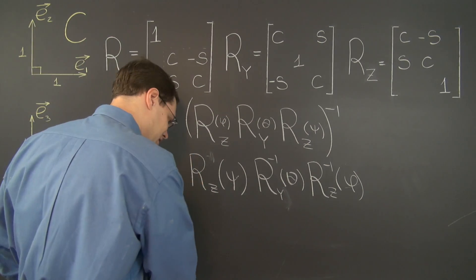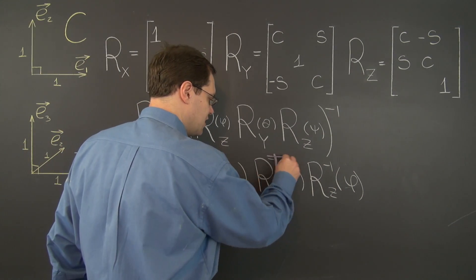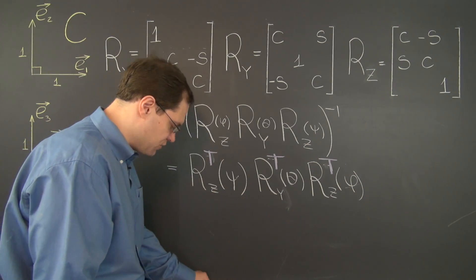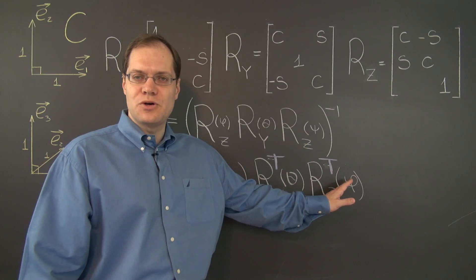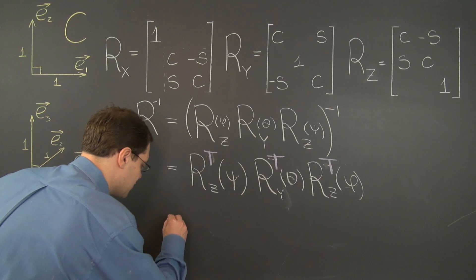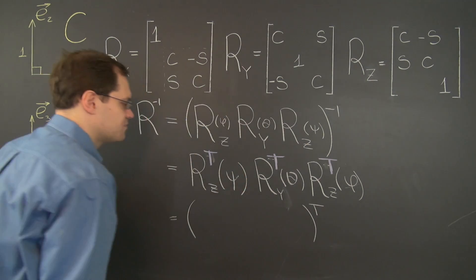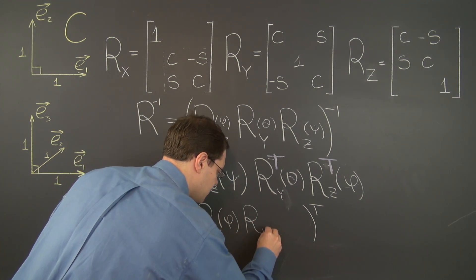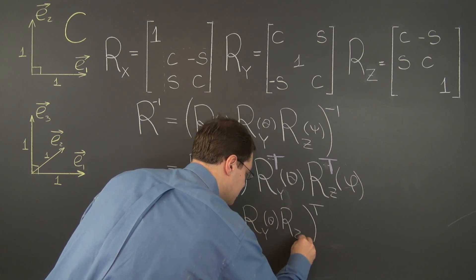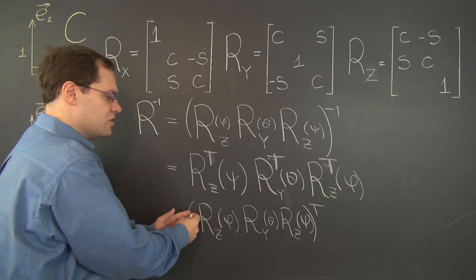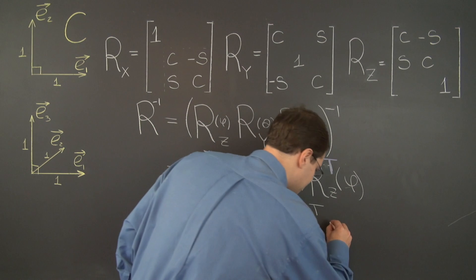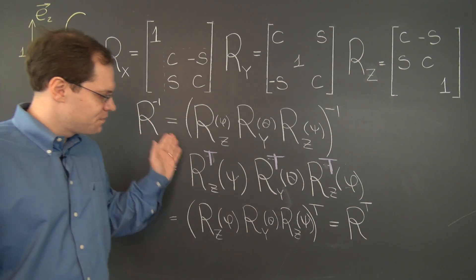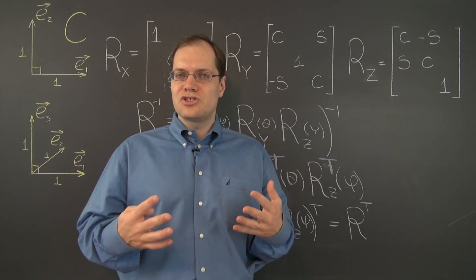Now we'll use the fact that each one of these matrices is orthogonal. So its inverse. I'm going to do it right in place with a different color chalk. So the inverse is the transpose. Inverse is the transpose. Inverse is the transpose. And now we have the product of the transposes in this reverse order. And as you know, the product of the transposes is the transpose of the product in once again the reverse order. So this will be the transpose of this product. And now the order is restored. It's now once again the original order. R sub Y of theta and finally R sub Z of Psi. So the order has been restored. So what we have in parentheses right here is R itself. And we have R transpose, keeping this transpose. So the inverse of the matrix R is its transpose. So yes indeed, the matrix R is orthogonal.